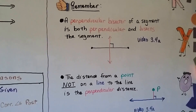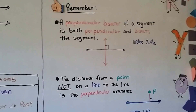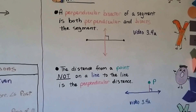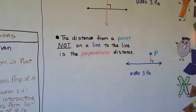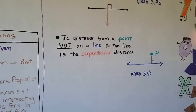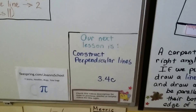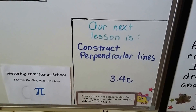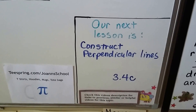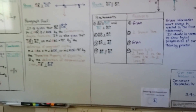Remember, a perpendicular bisector of a segment is both perpendicular to and bisects the segment — we did that in the last video, 3.4a. The distance from a point not on a line to the line is the perpendicular distance, and that perpendicular distance is the shortest one — also covered in 3.4a. Our next lesson, 3.4c, is going to be constructing perpendicular lines through a point.